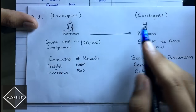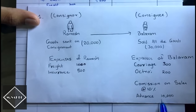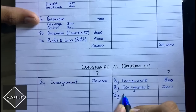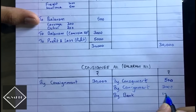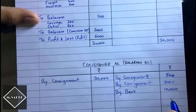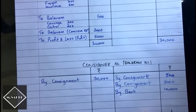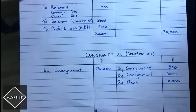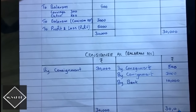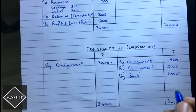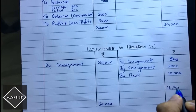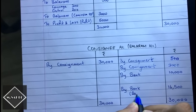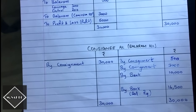Balaram had paid an advance of rupees 10,000 to Mahesh, so we record it on the credit side of the consignee account as 'By Bank — rupees 10,000.' After balancing, the debit side is larger, giving a balancing figure of rupees 16,500 recorded as 'By Bank' — this is the amount still due from the consignee.